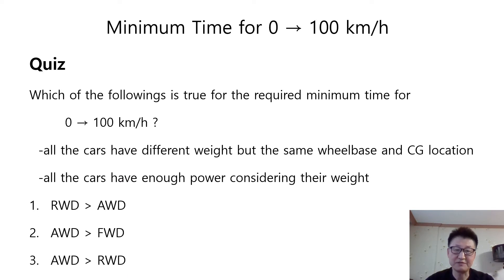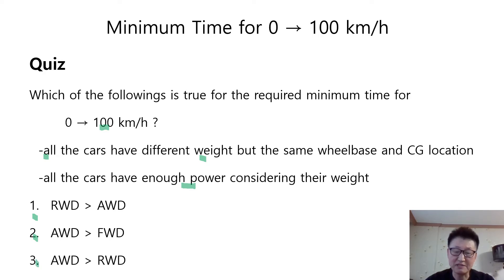Here we have a quiz for you. Which of the following is true for the required minimum time for 0 to 100 km per hour? There are two conditions: all the cars have different weight but the same wheelbase and CG location, and all the cars have enough power considering their weight. We have to choose the right one among three choices.